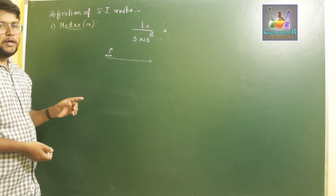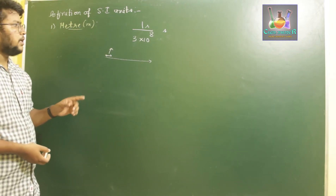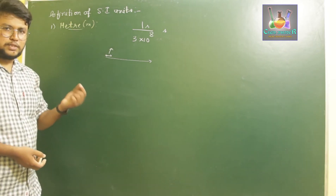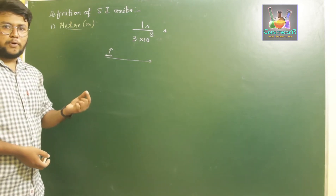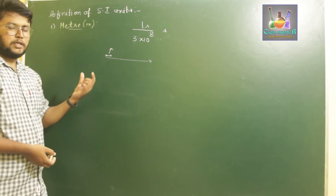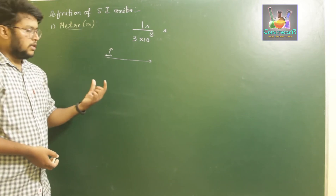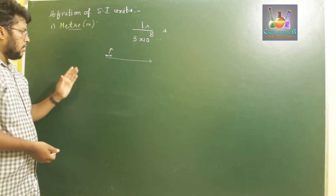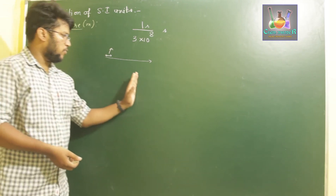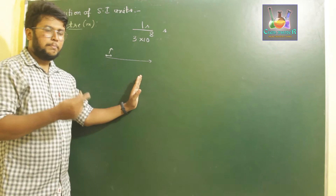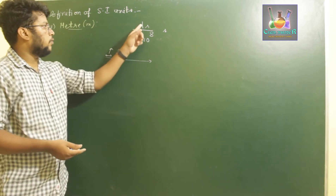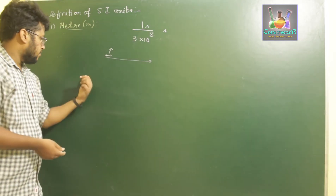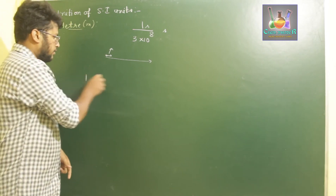If light travels from one point to another within that tiny time interval, the distance from one point to the other is called one meter. So meter is defined as the path traveled by light in vacuum for 1/(3 × 10⁸) of a second.